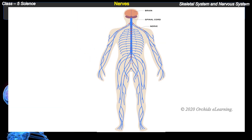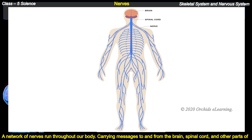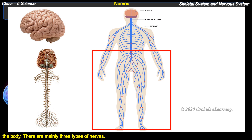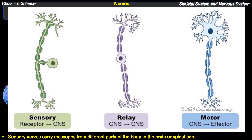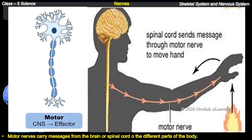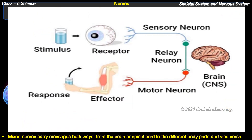A network of nerves runs throughout our body, carrying messages to and from the brain, spinal cord, and other parts of the body. There are mainly three types of nerves. Sensory nerves carry messages from different parts of the body to the brain or spinal cord. Motor nerves carry messages from the brain or spinal cord to different parts of the body. Mixed nerves carry messages both ways — from the brain or spinal cord to the body parts and vice versa.